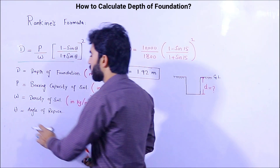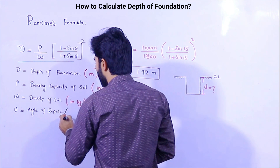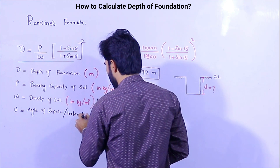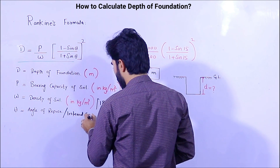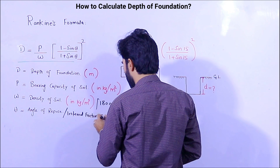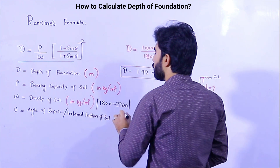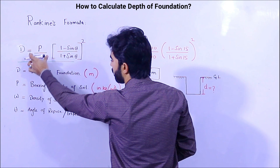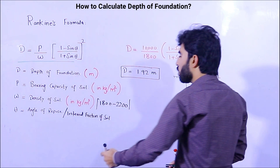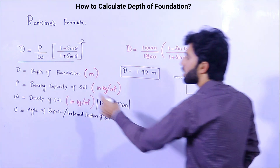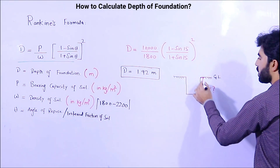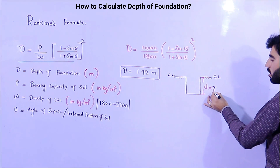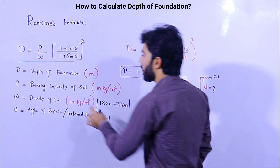Theta is the angle of repose, or the angle of internal friction of soil. Here you can see: this is the ground level, and this is the depth of foundation D. The bearing capacity of soil p is in kg per meter square, as I mentioned.